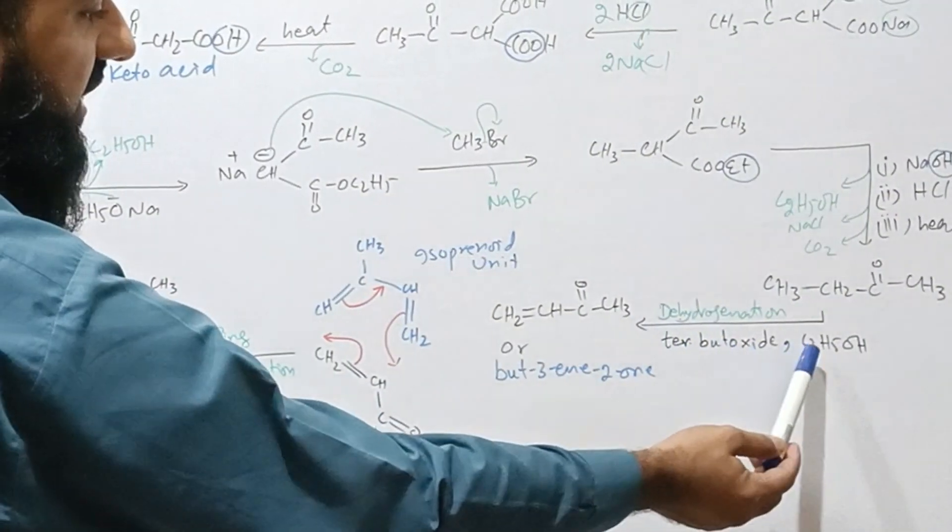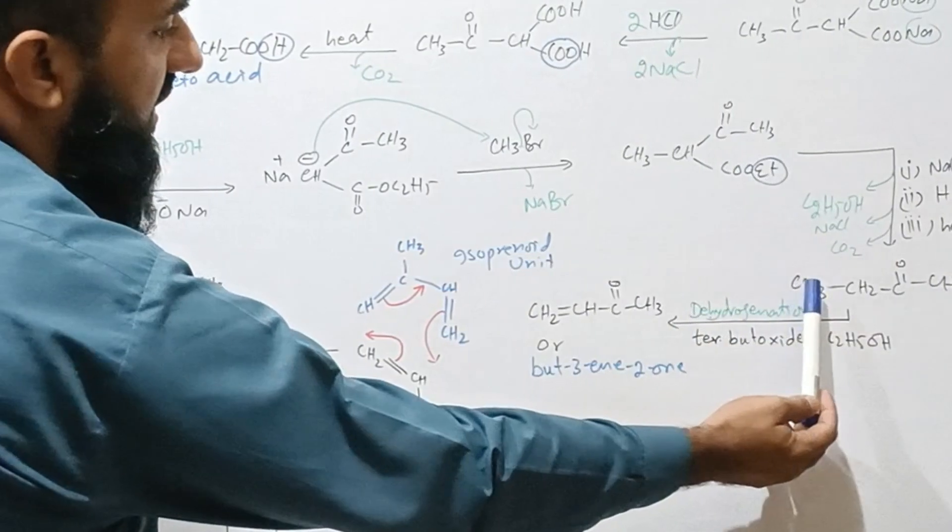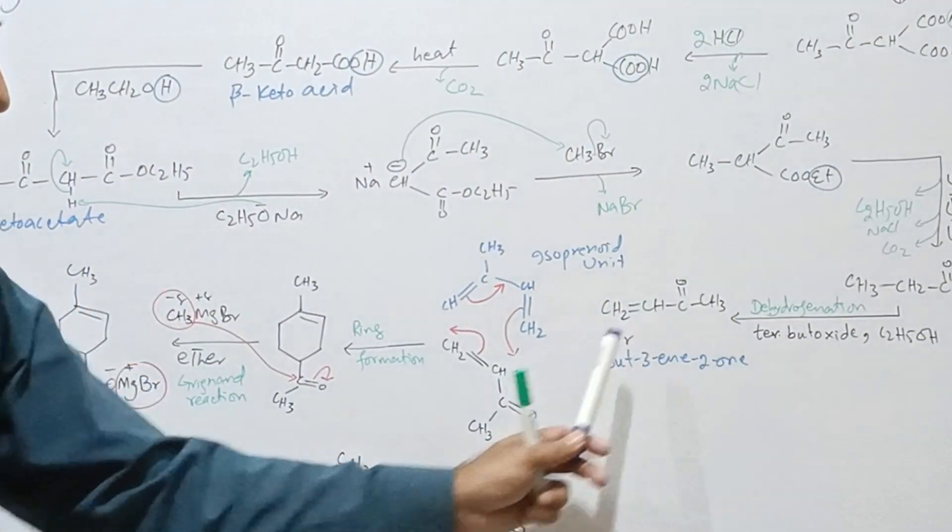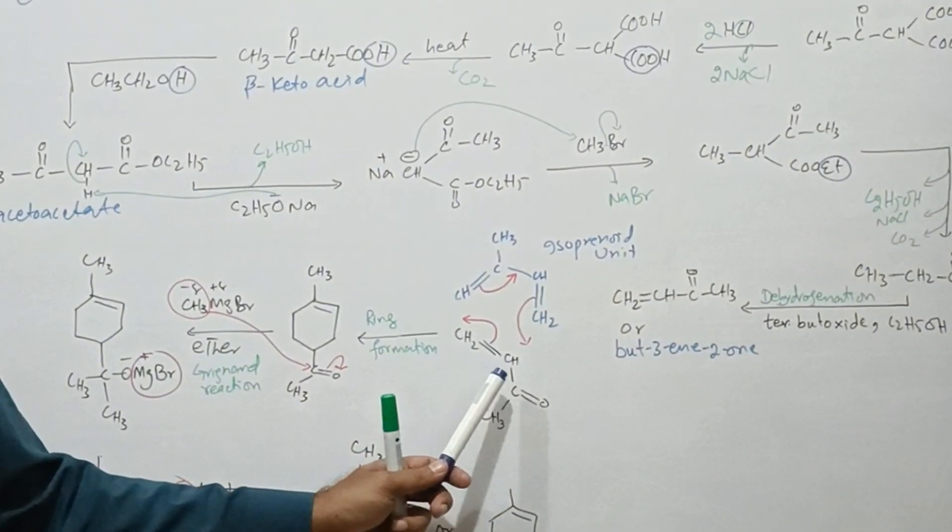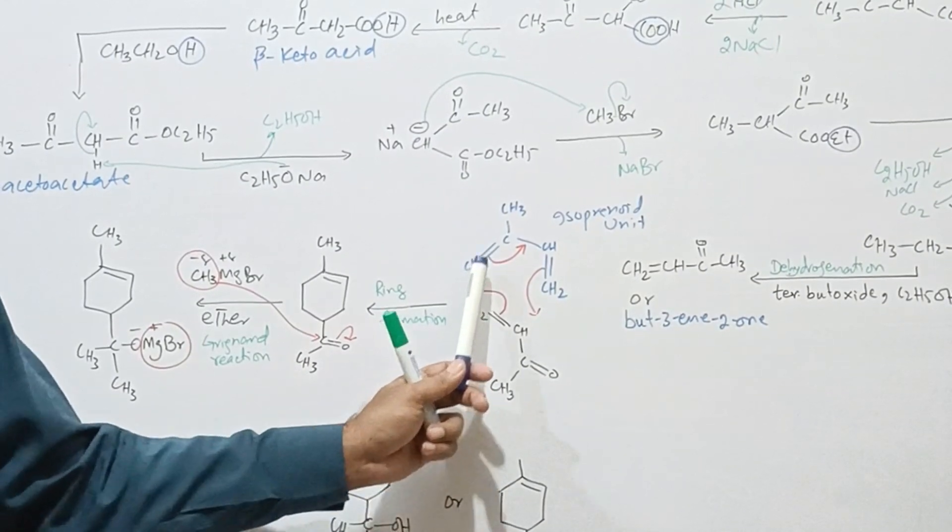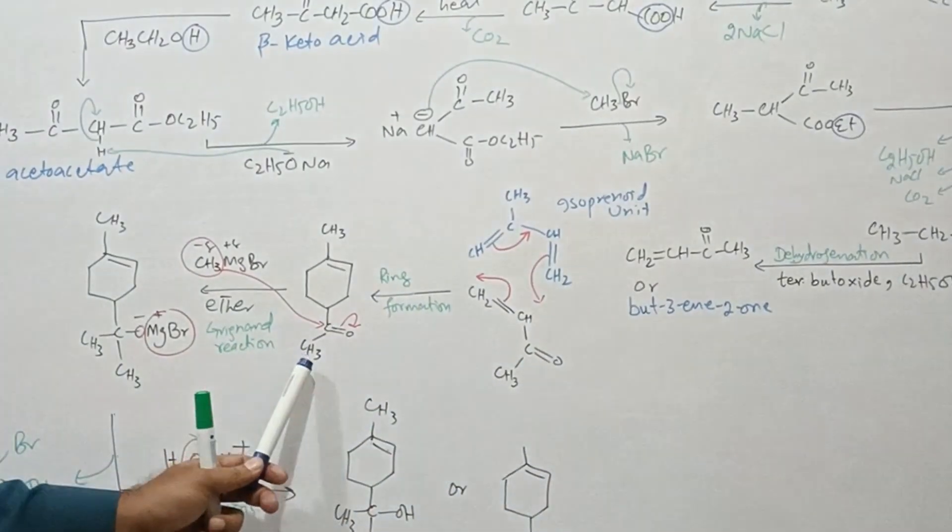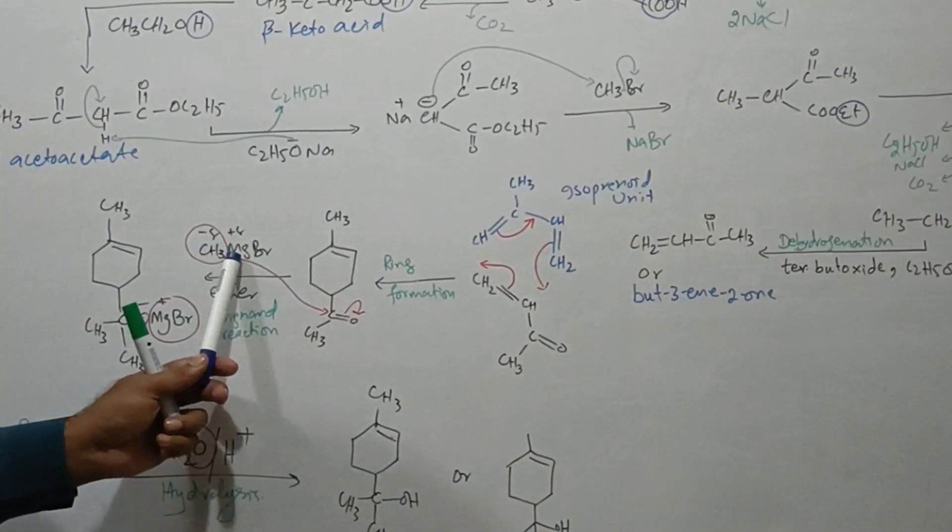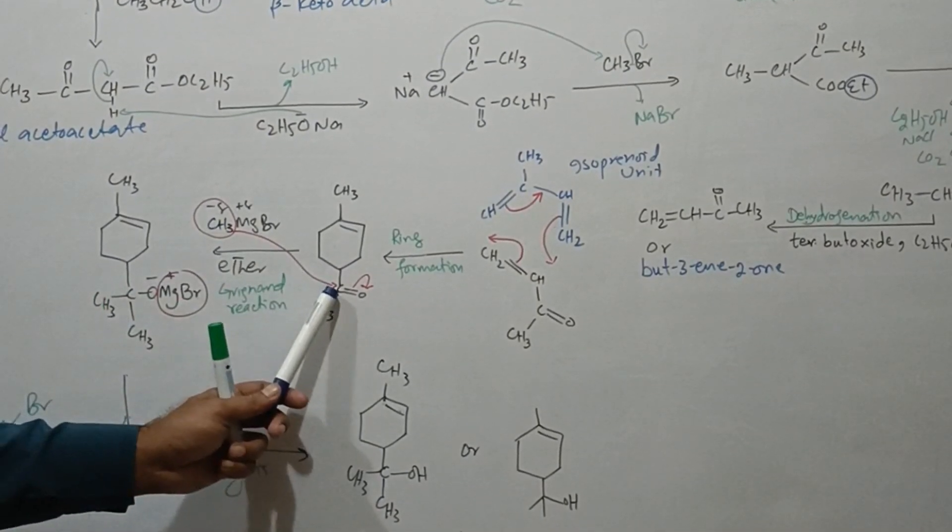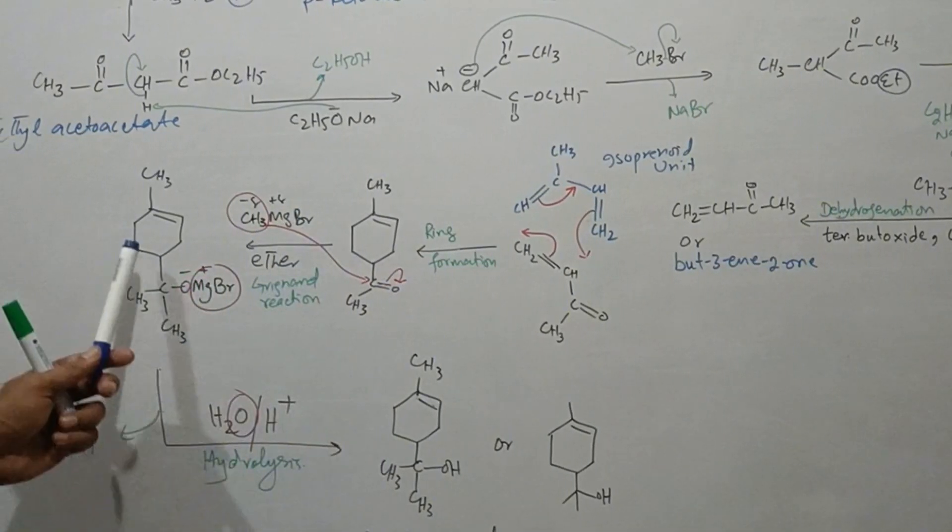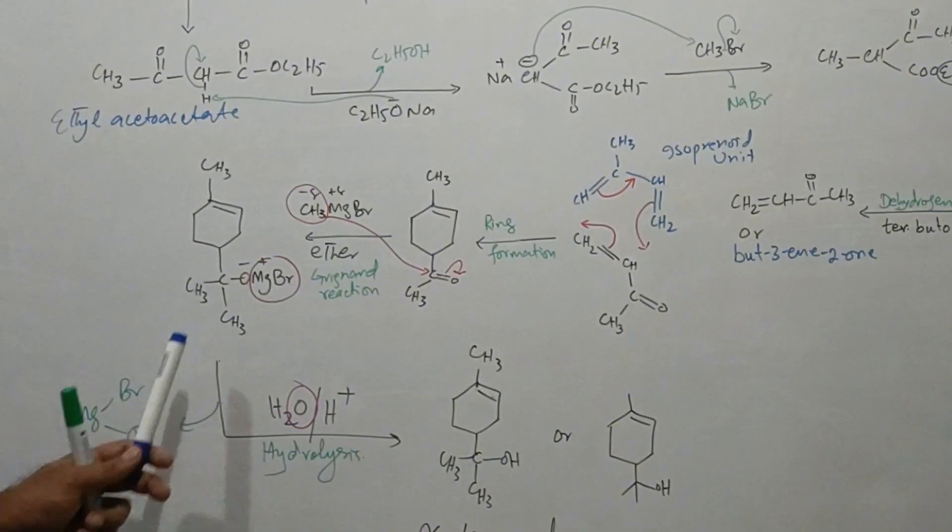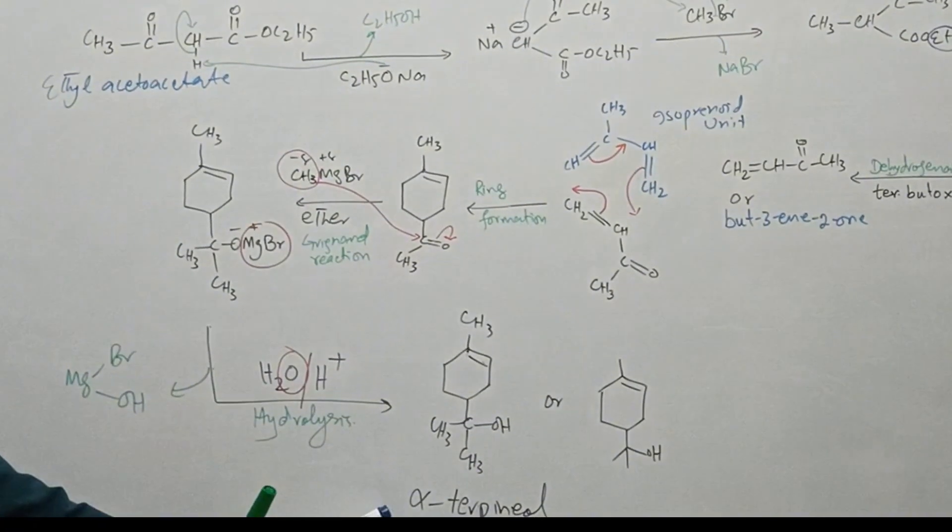Butanone is treated with tertiary butoxide in the presence of ethanol. Dehydrogenation takes place and we get but-3-en-2-one. This unsaturated ketone is treated with isoprenoid unit. Bonds shift, ring formation takes place, and we get this compound. This is treated with methyl magnesium bromide, a Grignard reaction, in the presence of ether. The methyl attacks the carbonyl carbon, pi bond shifts to oxygen, which attacks magnesium. Upon hydrolysis, magnesium bromide hydroxide is removed and alpha-terpineol is formed.